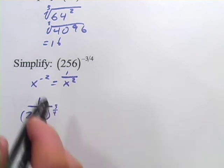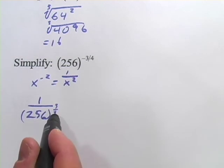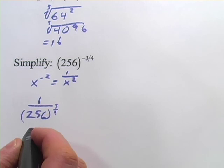You could, as we did in the previous one, write squared and then cube root. Or you could write, in this case, 4th root and then cubed. And I think I'm going to do it that way because I happen to know the 4th root of 256 is 4. So let's write it that way.